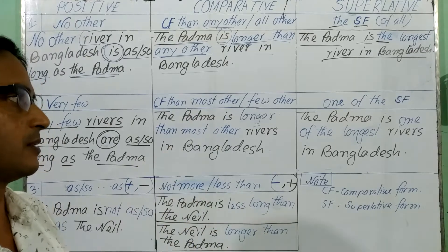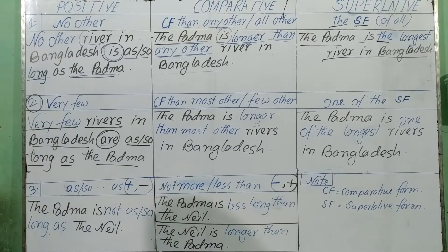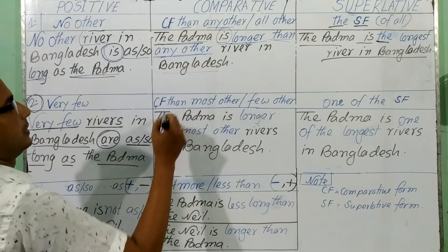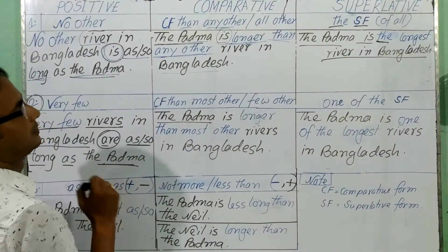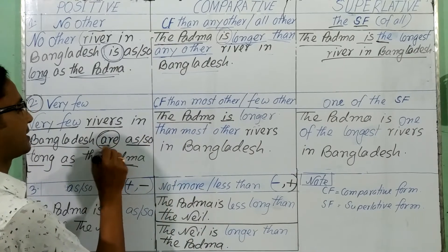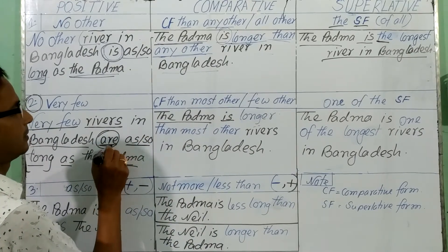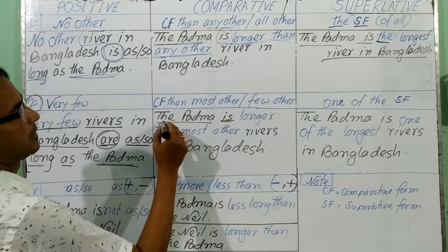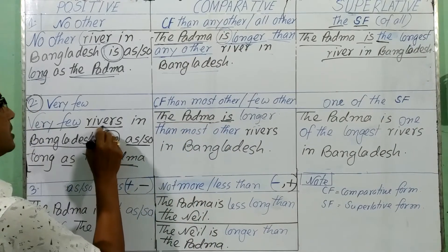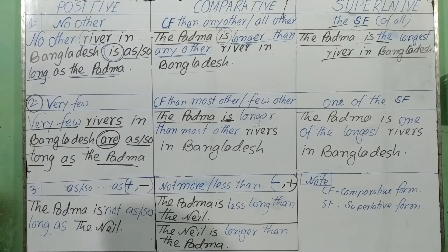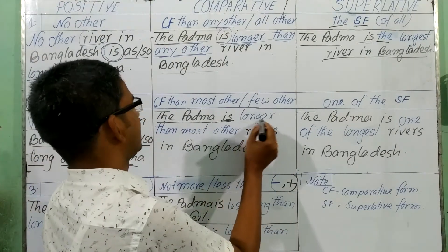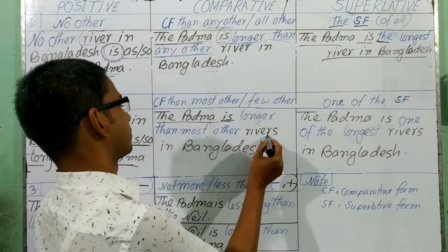To make it easy for you, I have given the same sentence. You will write the subject 'the Padma,' then the verb. You have to use 'is' because the Padma is a singular noun, while 'rivers' was the plural noun. And 'the Padma is longer than most of the rivers.'